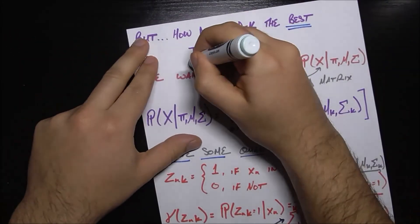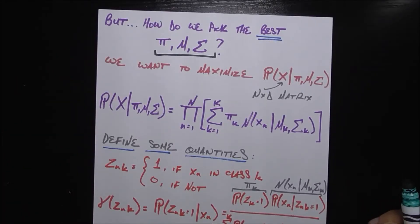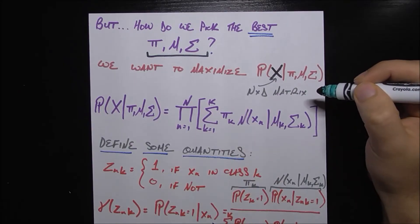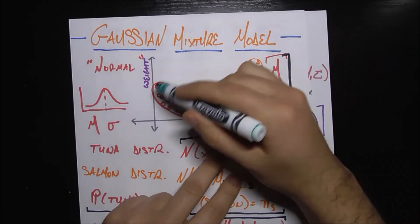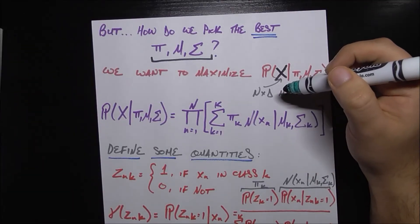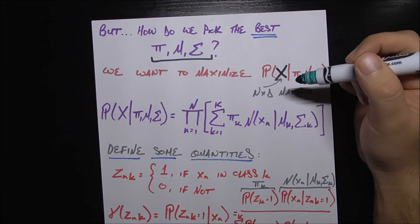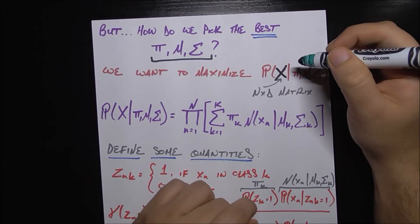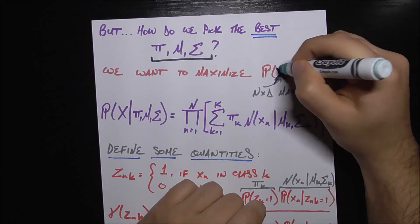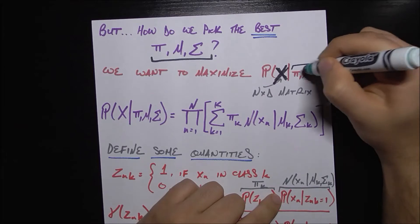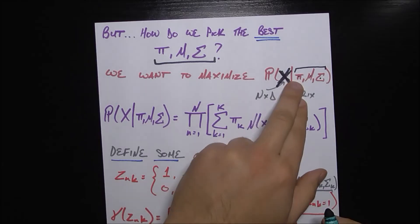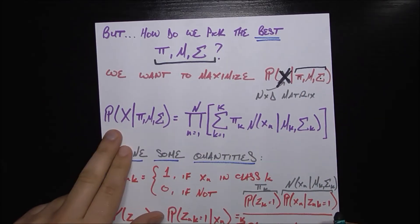How do we pick the best pi, mu, and sigma? A single observation is little x, but big X is an n-by-d matrix, n being the number of points — all of these salmon and tuna — and d being the number of dimensions, which is two. Given all of those fish with all their lengths and weights, we want to maximize the probability of seeing all that data given the parameters pi, mu, and sigma.